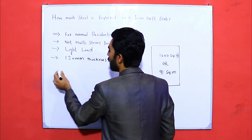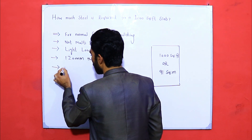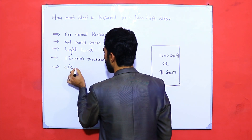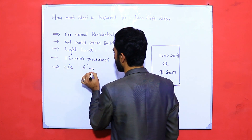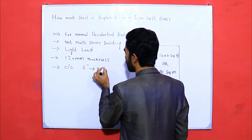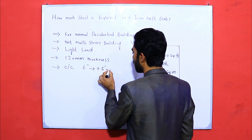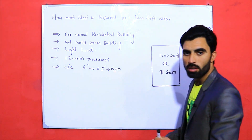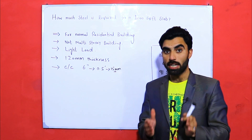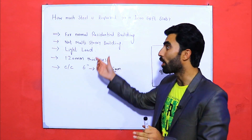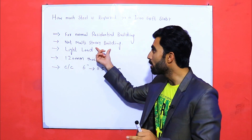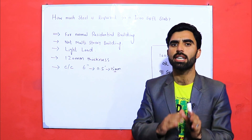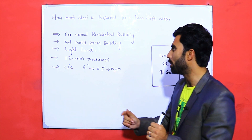The spacing for main bars and distribution bars should be 6 inches, or 0.5 feet, or 150 mm. So, this is for a normal residential building, non-multi-story, light load, with 120 mm thickness and 6-inch spacing.